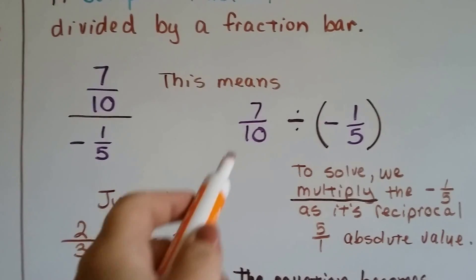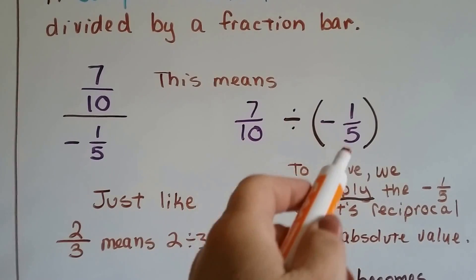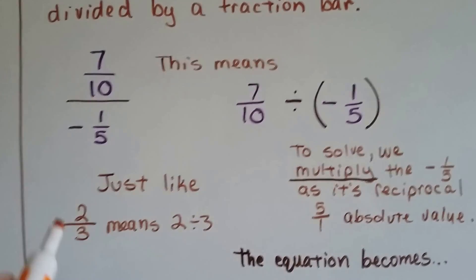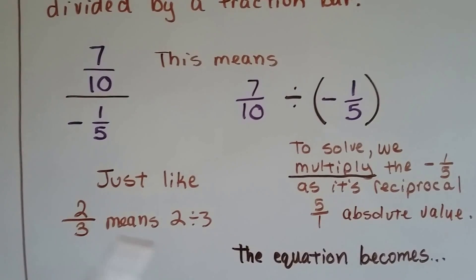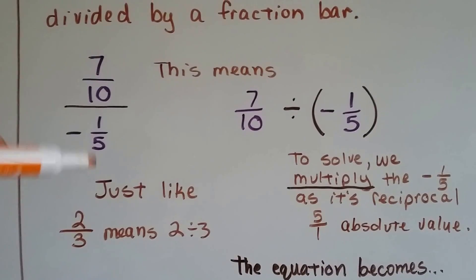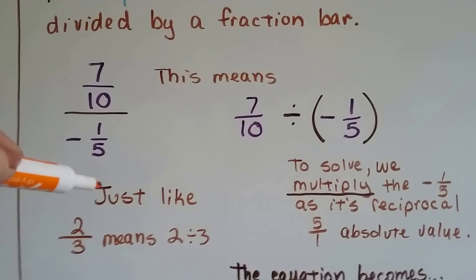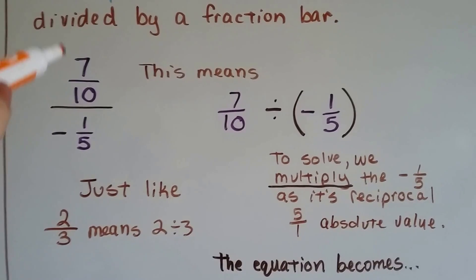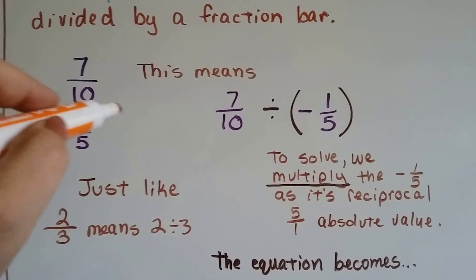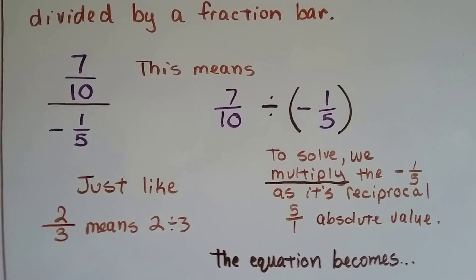All this means is 7 tenths divided by negative 1 fifth. It's just as if it said 2 thirds, meaning 2 divided by 3. Same thing. So don't flip out when you see a fraction on top of a fraction. This is not that abnormal in algebra and stuff. So you'll see this.